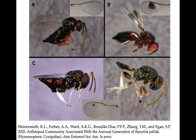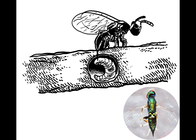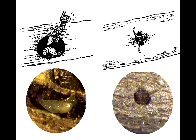My favorite of the parasitoids is this one. We recently described this beauty, and let me tell you a bit about what she does to the gall wasp host. The parasitoid mom lays an egg inside of the crypt while the gall wasp is developing.